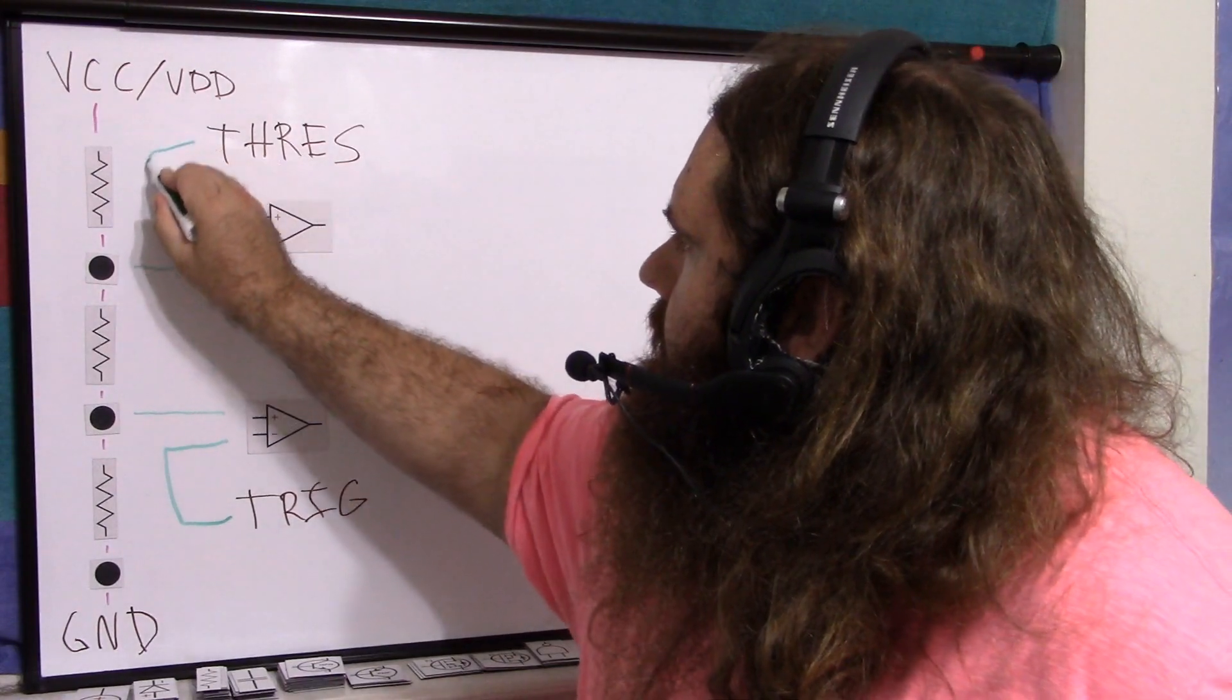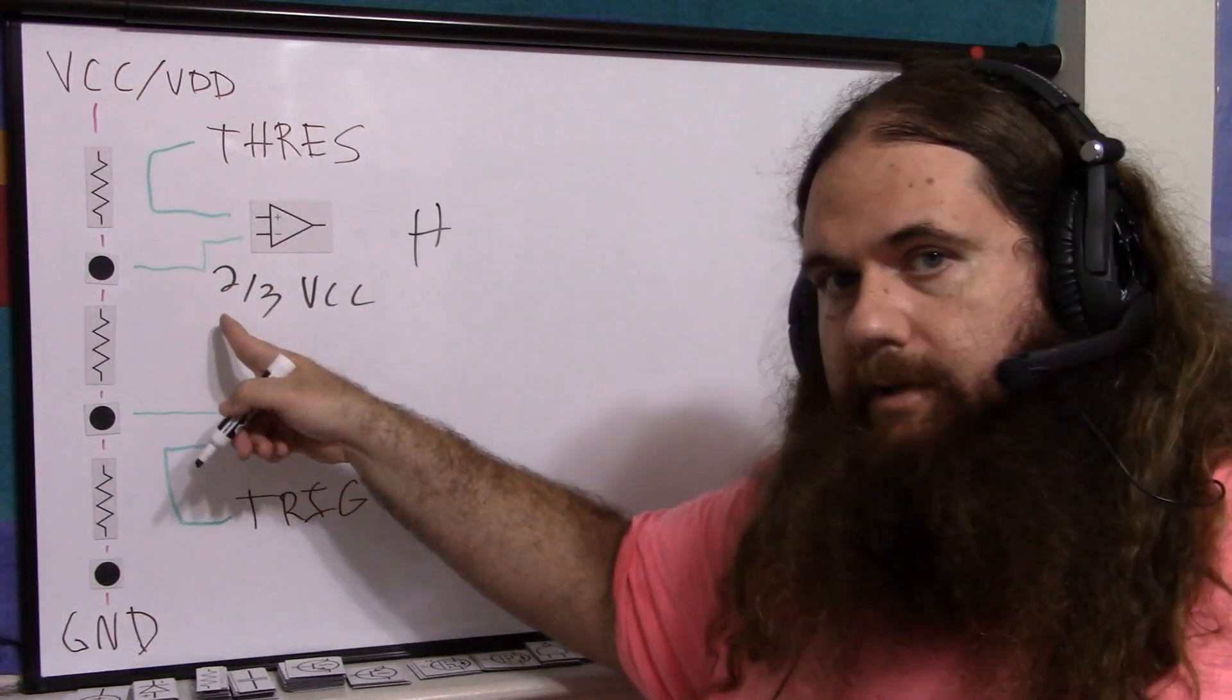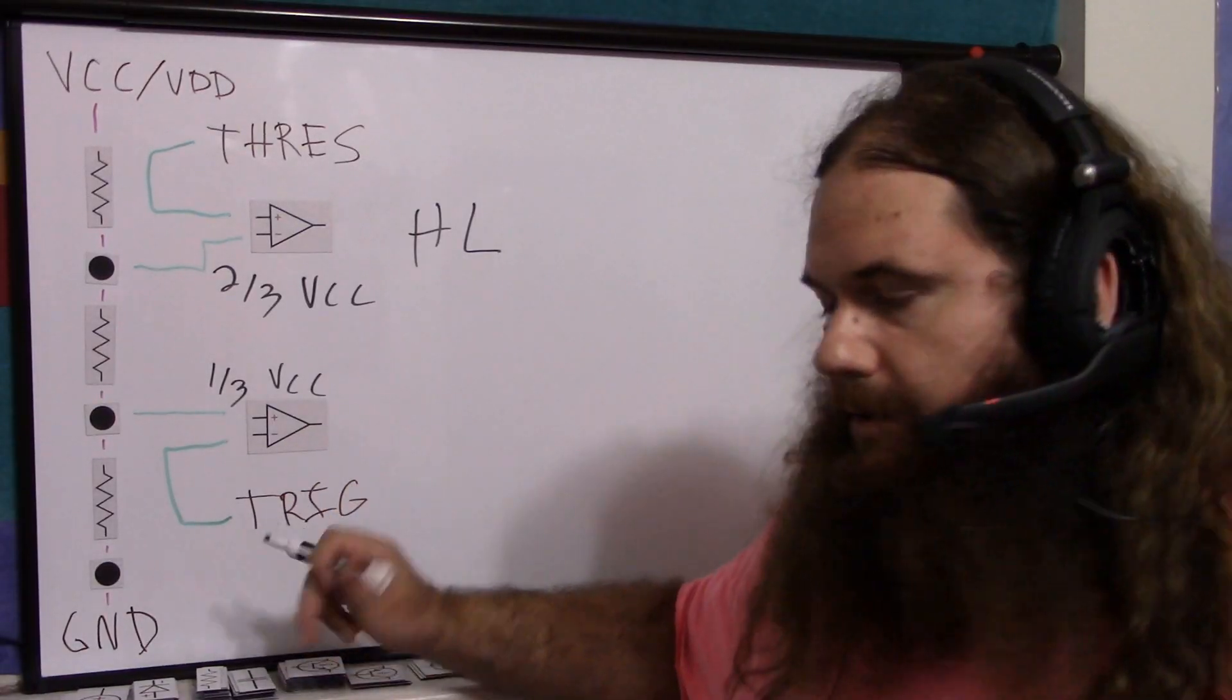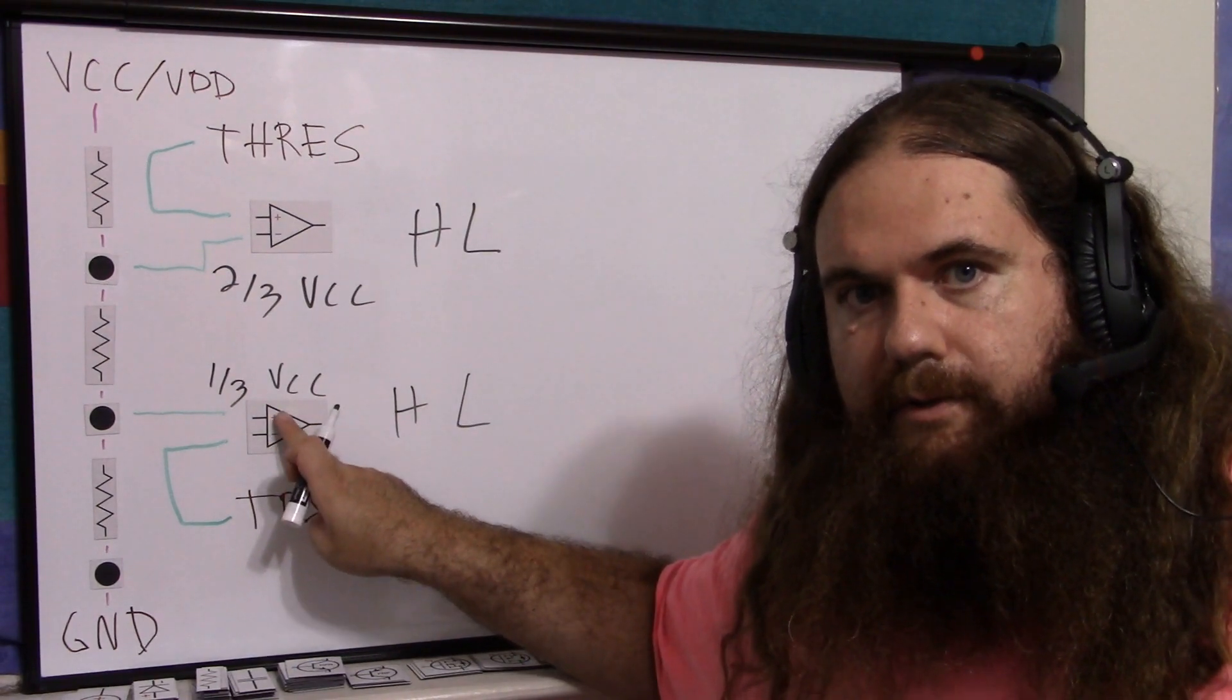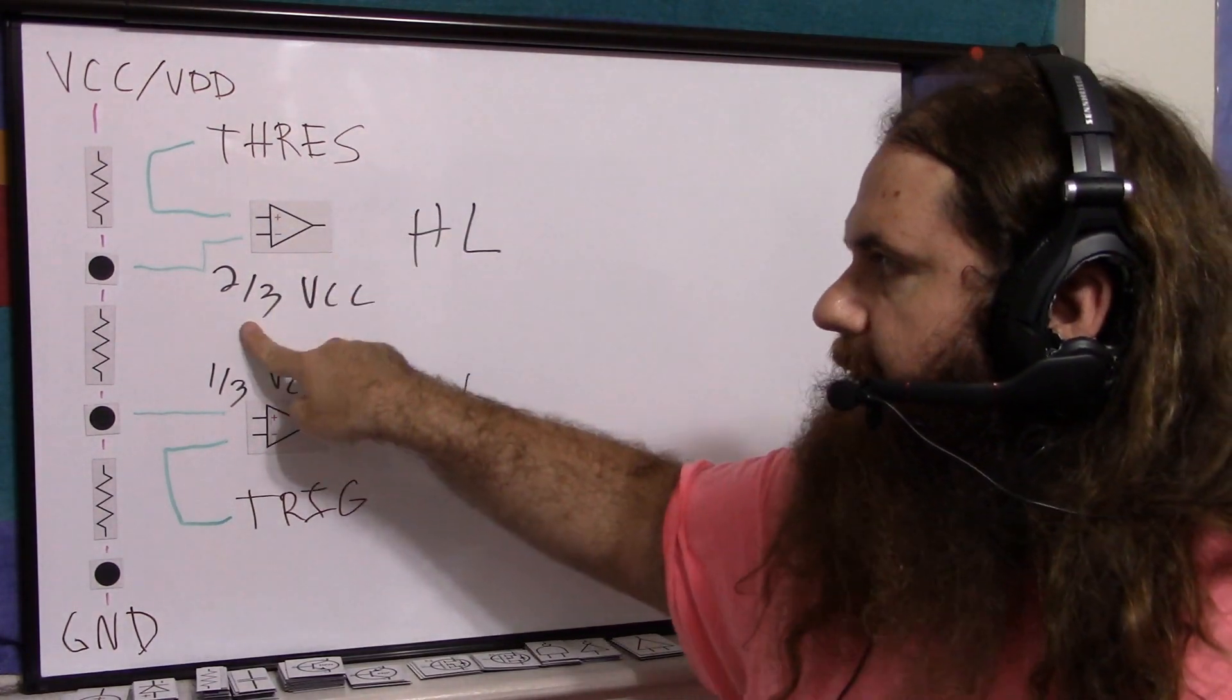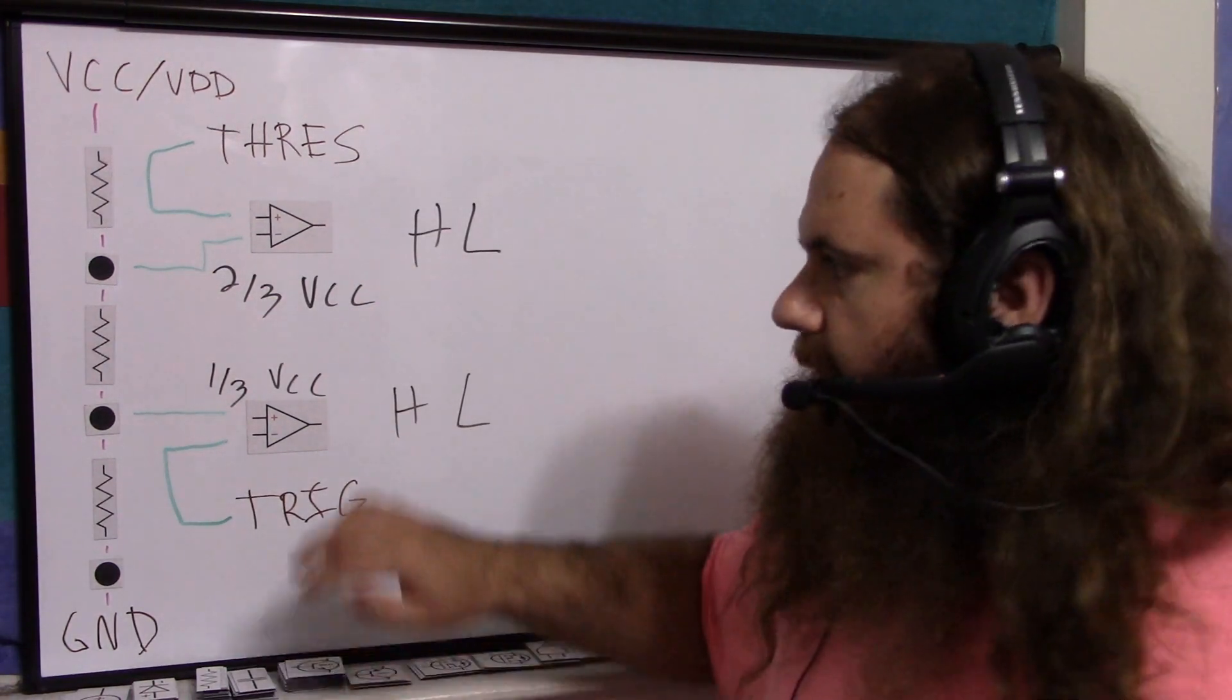The idea is that trigger is a signal that starts timing, and threshold is a signal that stops timing. Now, there's 800 million ways to hook up this chip, so that's a gross simplification, but roughly speaking, that's why they're named that. Trigger is hooked up to the negative here, threshold is hooked up to the positive there. Whenever threshold is greater than two-thirds VCC, we get a high. Whenever threshold is lower, we get a low. Down here, it's a less-than operation. If one-third VCC is greater than the trigger, then we get a high. If trigger is greater than one-third VCC, we get a low.